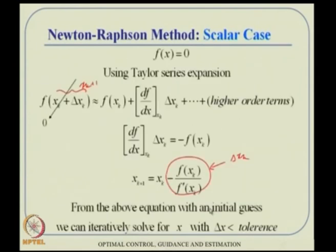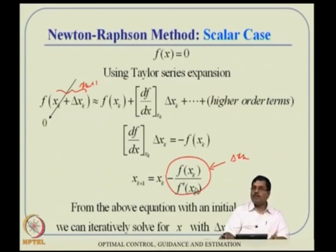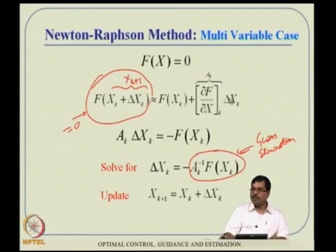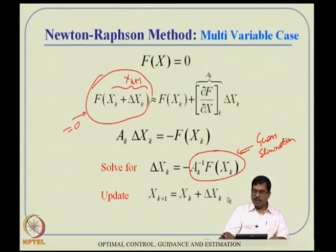The multivariable update is very similar to the scalar case. Instead of dividing by f'(x_k) — which is not defined for matrices — we multiply by -A_k^{-1}. All these numerical methods rely on Taylor series expansion as their backbone, whether root finding, numerical integration, or other methods.